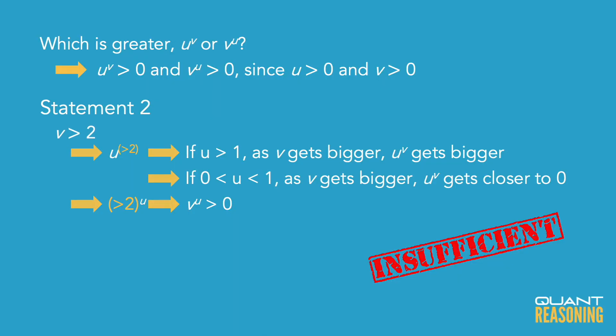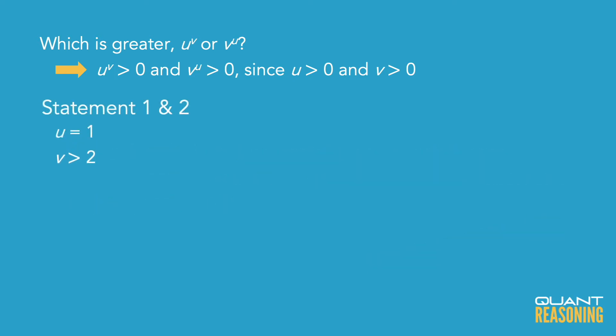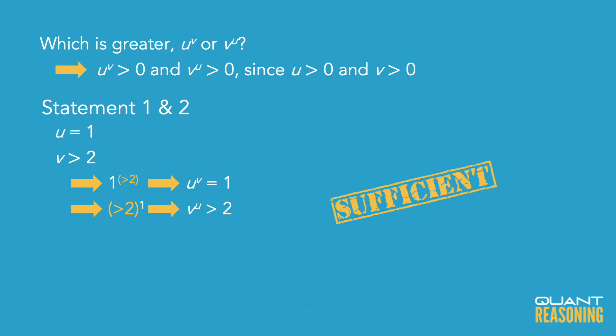Now if we combine the statements: u to the power of v turns into 1 to the power of more than 2, which is just 1. And v to the power of u turns into more than 2 to the power of 1, which is more than 2. So which is greater — 1 or more than 2? More than 2, of course. We can answer this question by combining the statements, and therefore the correct answer is C.